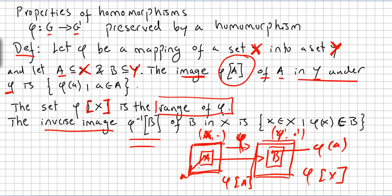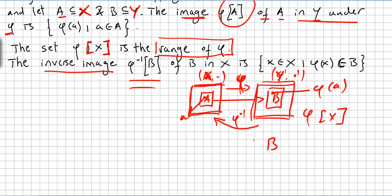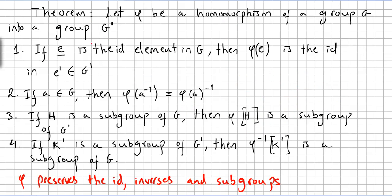And the inverse image — so the inverse image of B: I pick all of B and send it back. I pick B and send B back to A. This will be the inverse image of B, the inverse image in X. That will be x in X such that Phi(x) is in B.